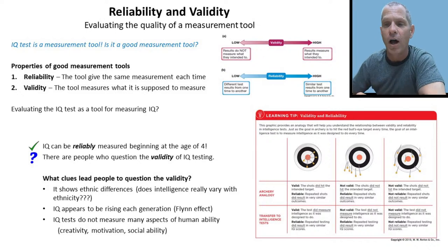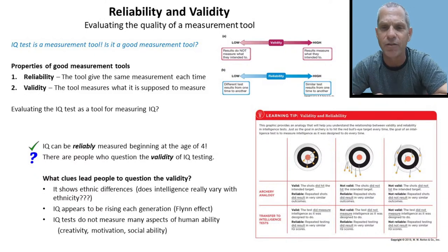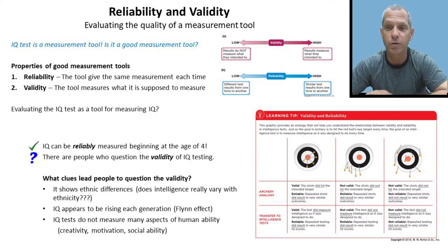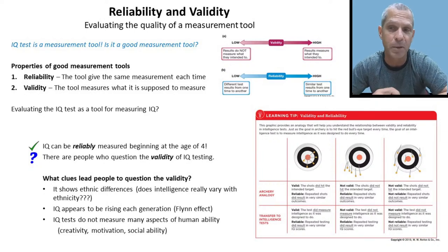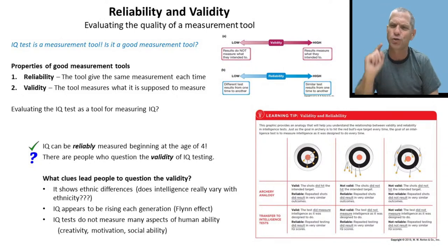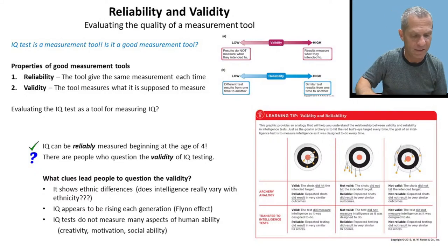Most people, when they talk about intelligence, want to talk about things like creativity, common sense, motivation, the ability to schmooze people and get what you want. None of these qualities are included on IQ tests. IQ tests only measure school-related activities. So how can we be sure that an IQ test measures this thing we call intelligence?